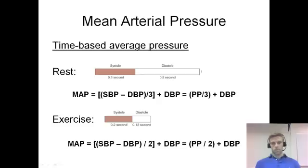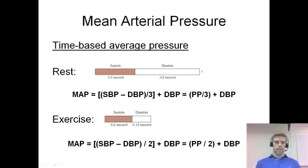You might wonder why we don't just take the average of systolic and diastolic. It's because there's a difference in time between diastole and systole that we have to account for. So instead, we do pulse pressure divided by 3, plus your diastolic blood pressure, and that gives you your mean arterial pressure, or MAP.